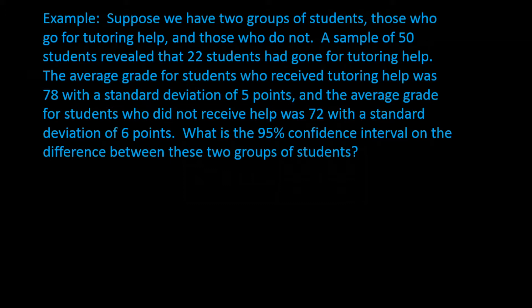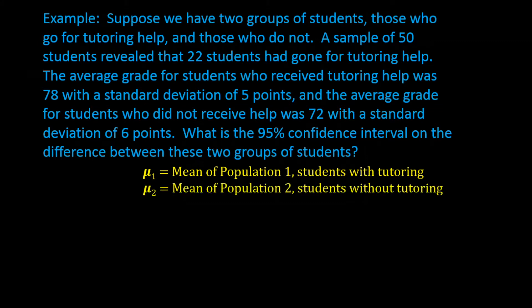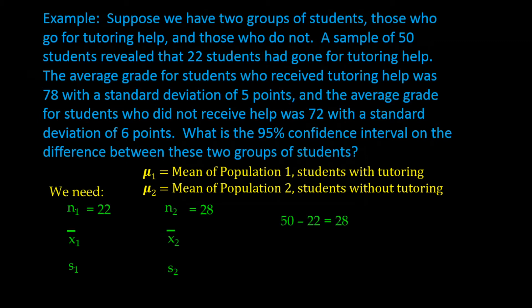Let's define mu1 as the mean of population 1 (students with tutoring) and mu2 as the mean of population 2 (students without tutoring). We need n1, n2, x-bar1, x-bar2, s1, and s2. From the problem, n1 is 22. Since 50 total students minus 22 who went for tutoring equals 28, n2 is 28. From the problem: x-bar1 is 78, x-bar2 is 72, s1 is 5, and s2 is 6.